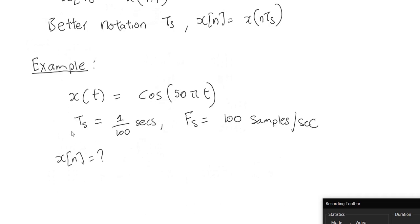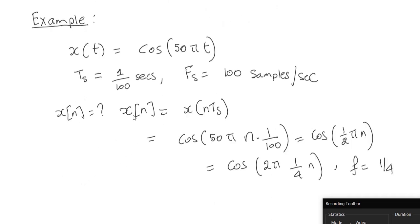Let's look at an example. I have a continuous signal x of t equals cosine of 50π t. If my sampling period is 1 over 100 seconds, that means my sampling rate fs is 100 samples per second. In this case, what will be my discrete time signal? Based on our discussion above, x of n should be x of n times Ts. If I substitute t for n times Ts, I get cosine of 50π n over 100, which results in cosine of 2π times one-fourth times n. So in this case, my discrete frequency is one-fourth.